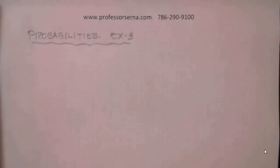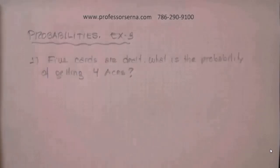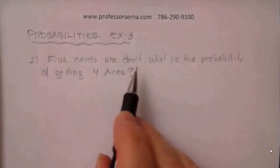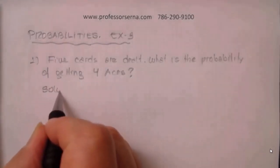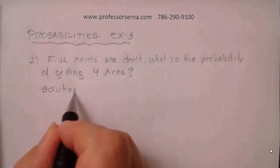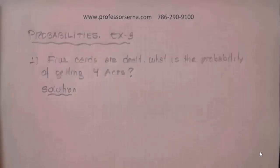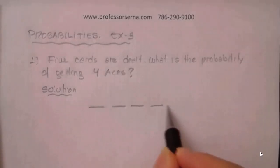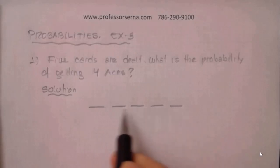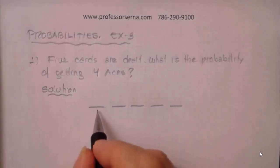Students keep asking about videos about probabilities, so this is a third set of probability problems, a little more complicated than number one and number two. Five cards are dealt — what is the probability of getting four aces? So we have five cards dealt and we want four aces.